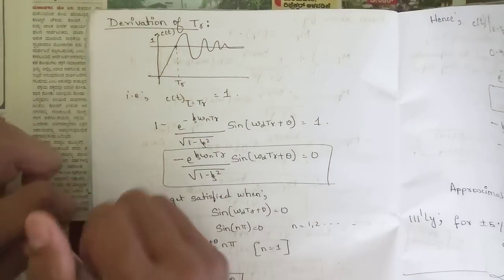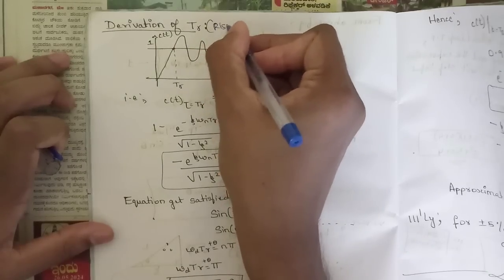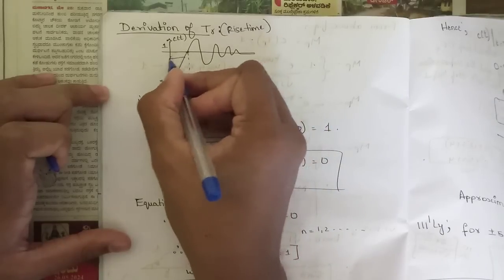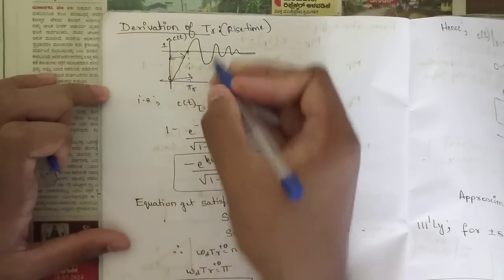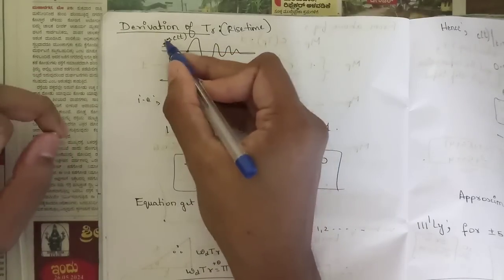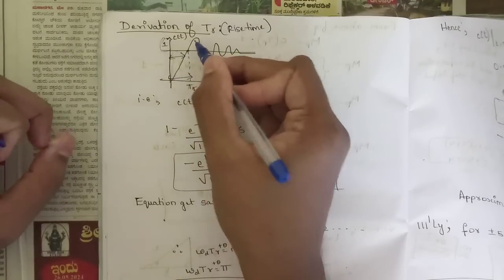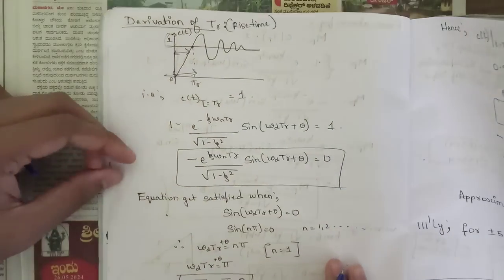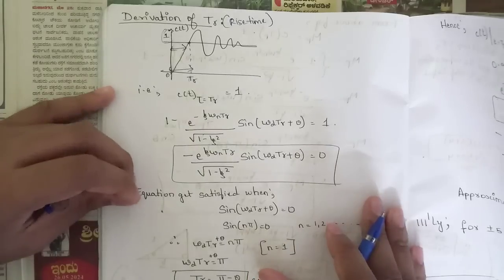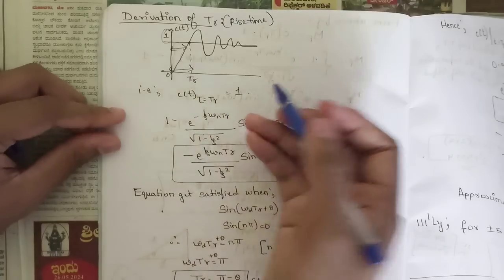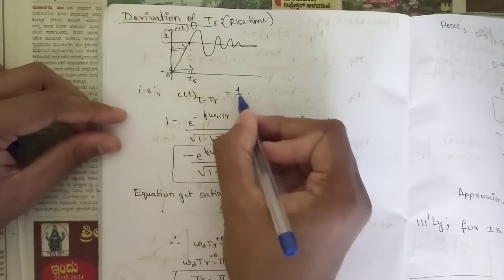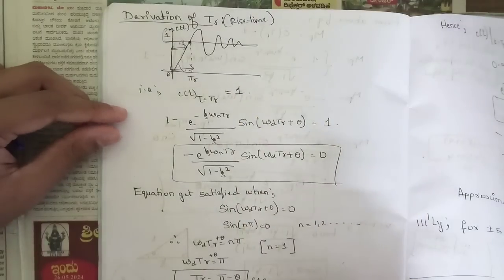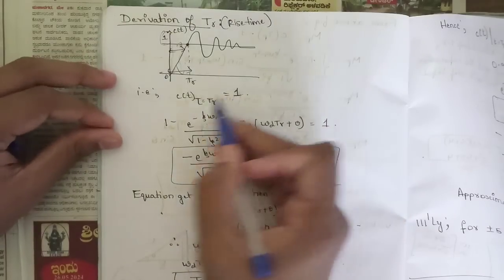The next derivation is the derivation of rise time tr. In this plot, this region is called the rise time. The rise time tr is where the response goes above the given level — above the unit step of one. The point from the origin where it crosses one is tr. For the derivation of tr, we take the output response c(t) at t equal to tr, which equals one, since tr marks the range from zero to one. So we write c(t)=1 at t=tr.